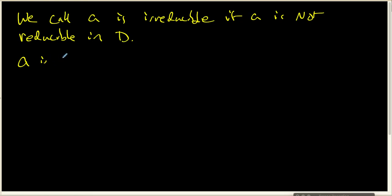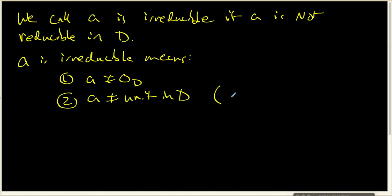So a is irreducible means, first of all, a is not going to be the 0 element. Second of all, a is not going to be a unit inside D. In other words, a is not part of U_D.